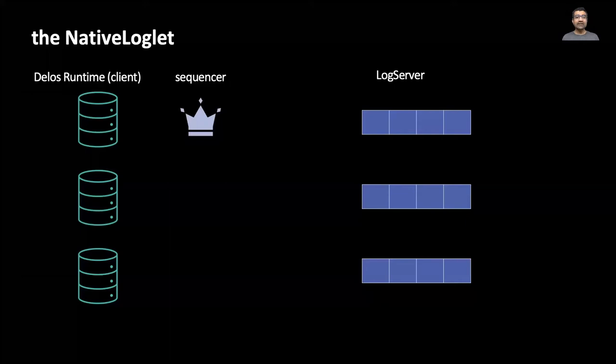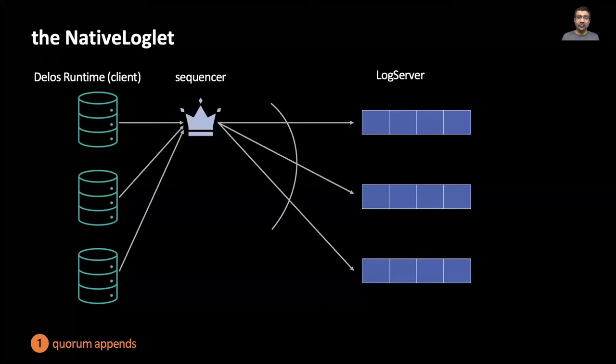In the native loglet, each Delos server runs the Delos runtime, which is the client for the shared log, as well as a log server component. One of the servers acts as a sequencer. In this picture, we have three machines, each acting as both a client and a log server for the native loglet. To append to the native loglet, a client forwards the update to the sequencer, which then goes to the log servers and waits for a majority of replies. This is a fast operation, but it's not fault tolerant.